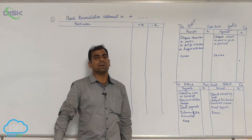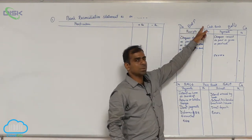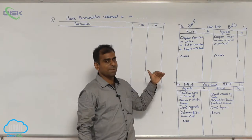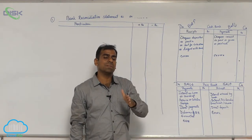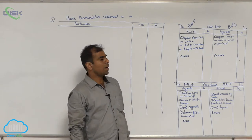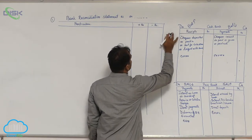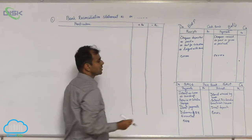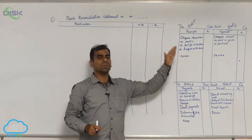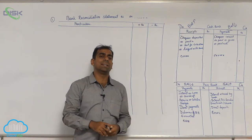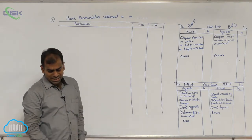You will always be given a balance of either the cash book or the pass book. Whichever book is given is your starting balance, and you have to find out the balance of the other book. For example, if you are given cash book balance, you write pass book as your target in working notes. Be very sure whether the amount has to be added or subtracted using this simple format.